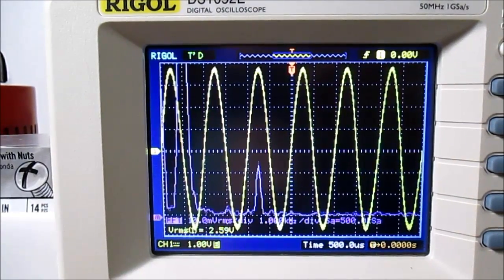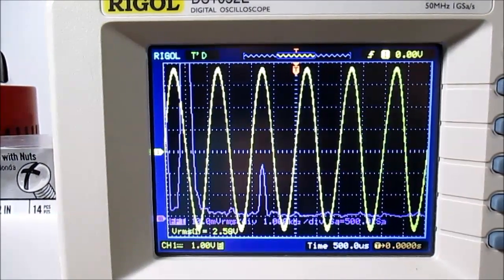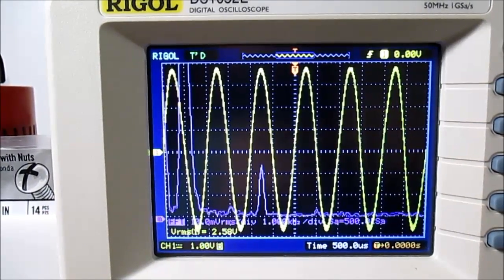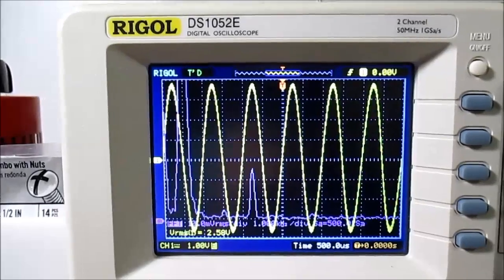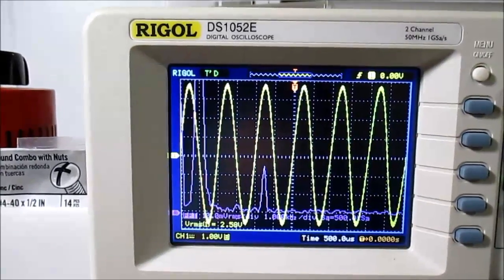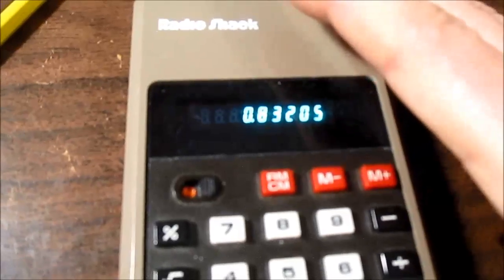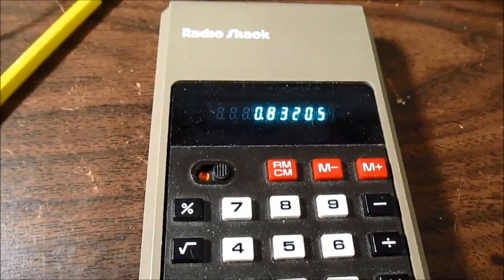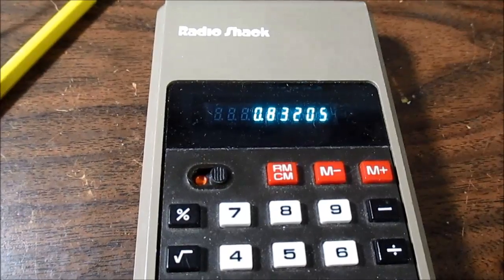Here's the TDA 7052. It's actually a bridge amp. And we're running at 6 volts. Because of the thermal dissipation and current limits, I really can't run this at 9 volts. So with the 8 ohm load, we're getting 2.58 volts RMS, which comes out to 0.83 watts at 6 volts. So that's going to be a lot better than the other ICs. But again, it's a bridge type output, so it's going to put out more power than the others.